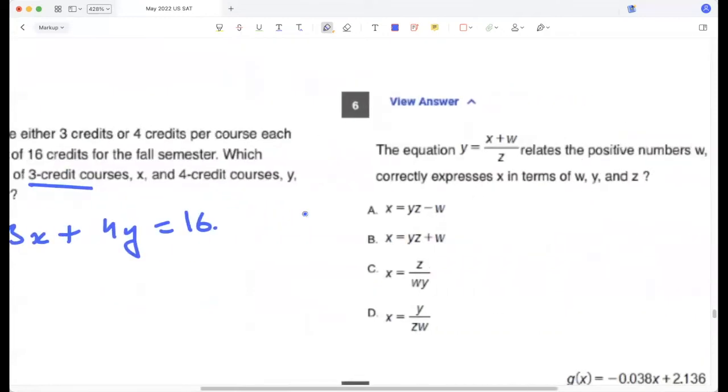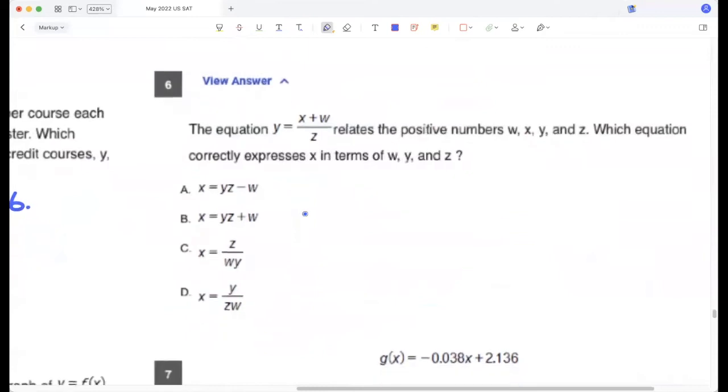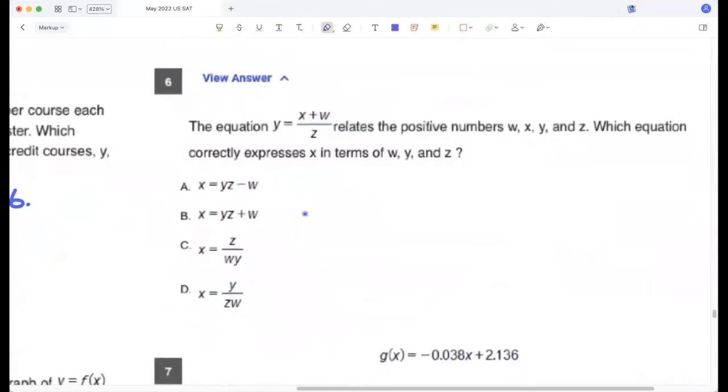The equation relates the positive numbers w, x, y, and z. Which equation correctly expresses x in terms of this? So y is (x + w)/z. So yz is x plus w. So x is yz minus w.